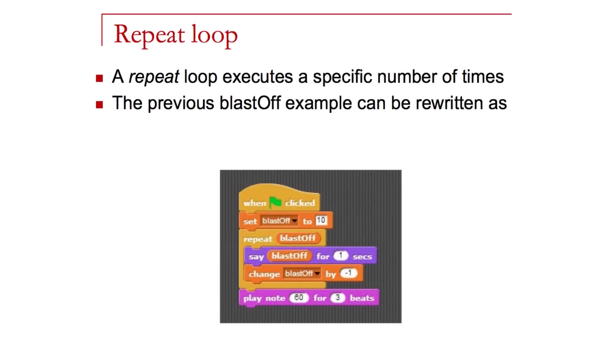Now a repeat loop is used when we know for sure that the loop is going to execute a certain number of times. So if I know in this last case that blast-off will execute 10 times, I can use that to an advantage and make the loop a little bit simpler because I don't have to have that Boolean expression check there.